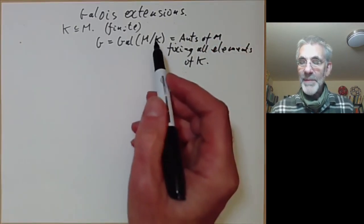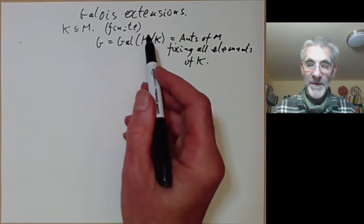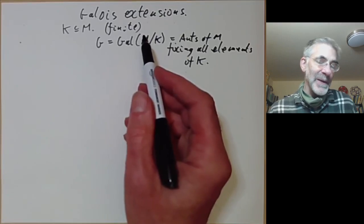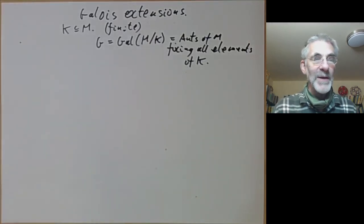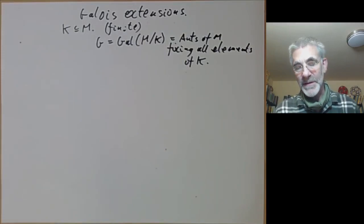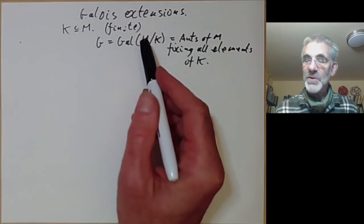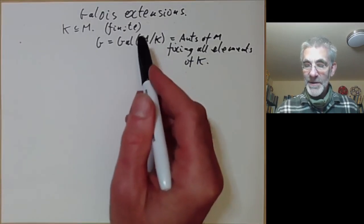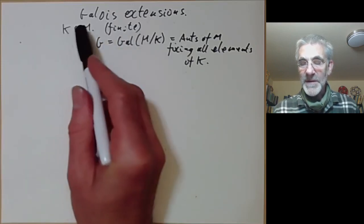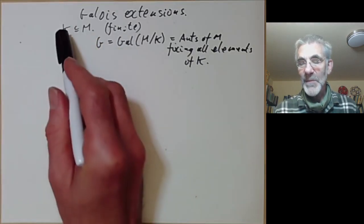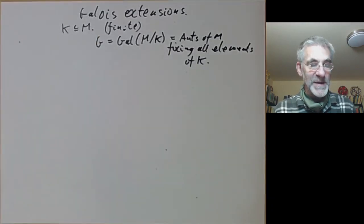You might think it more natural to define the group as the full automorphism group of M — and we sometimes do this, for instance when M is the field of all algebraic numbers. However, it's very useful to have a relative notion, defining the Galois group of an extension of fields, because then we can build up from one field to another in a series of steps.